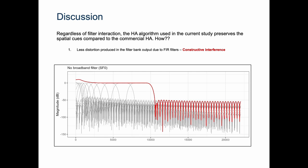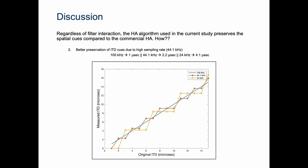First, less distortion produced in the filter bank output due to the use of FIR filters. The change observed in the combined magnitude frequency response can be due to constructive interference where the signals from adjacent filters were in phase so that they add up and nothing gets cancelled out.